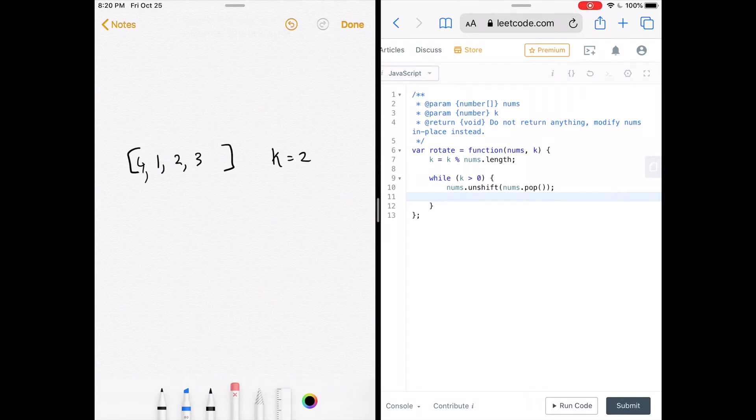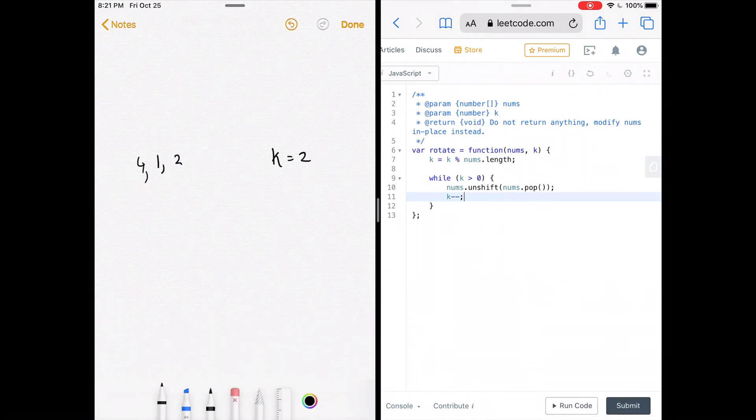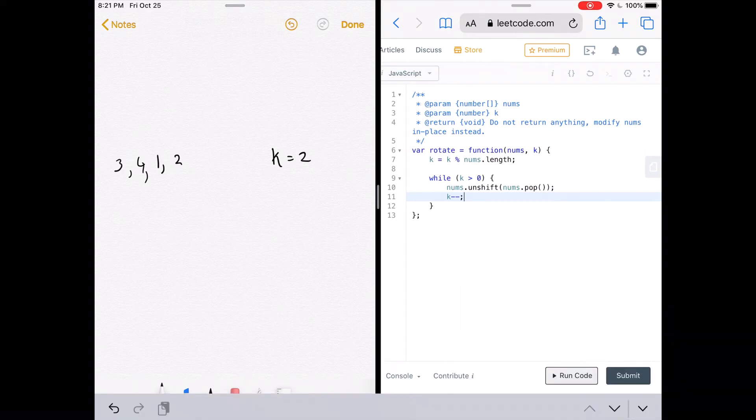Alright, what do we need to do? We need to decrement k by one. So we just need to do that one more time. Let me just get rid of these brackets to make it easier. So it would pop k off and immediately add it to the front of the array. And then that should be it.